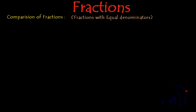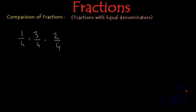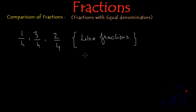When we are talking about fractions with equal or same denominator, we are actually talking about fractions like 1 by 4, 3 by 4, or 2 by 4. These are the fractions which have equal or same denominator, and what do we call these kind of fractions? Fractions with equal or same denominators are called like fractions.